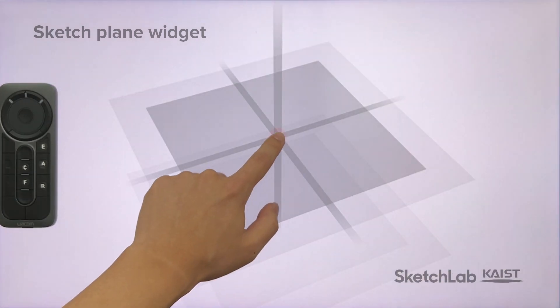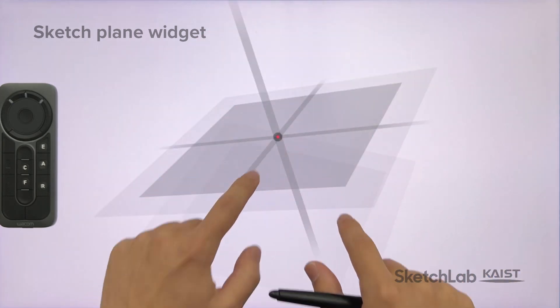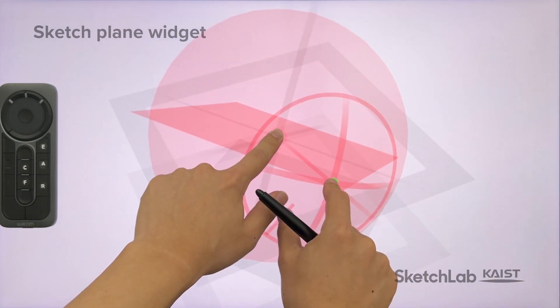Finally, while holding down the sketch plane center with the left hand, with the right hand, the designer can orbit the widget about the center with one finger, or orbit and spin the widget about the center with two fingers.